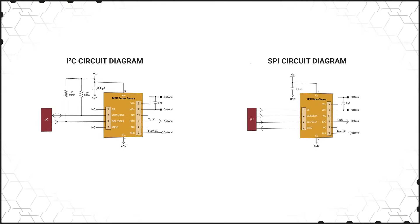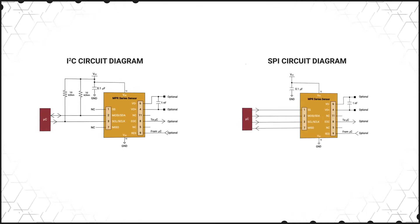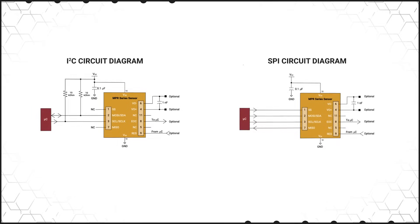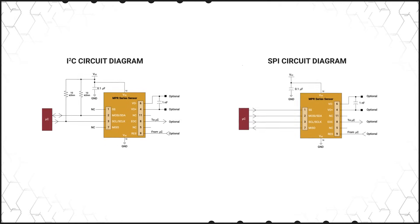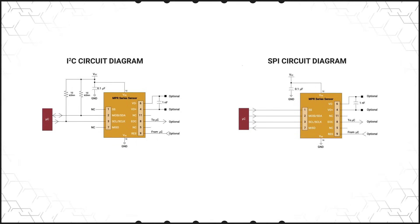The MPR series includes an onboard ASIC that compensates for a variety of factors over the 0 to 50 degrees Celsius temperature range and provides a 24-bit digital output. The sensors are offered with an I2C or SPI interface to interface directly to the host microcontroller.